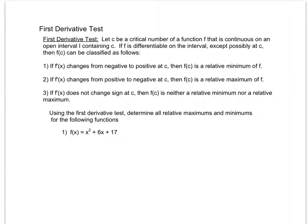Remember that at every single relative maximum or relative minimum — every hill or valley — there's a critical value there, because every time we make that turn, that hill, or that valley, our slope is hitting zero. We find critical numbers by setting our derivative equal to zero.